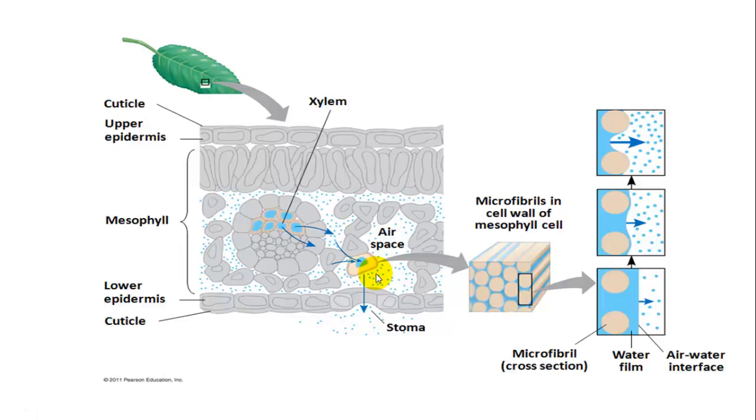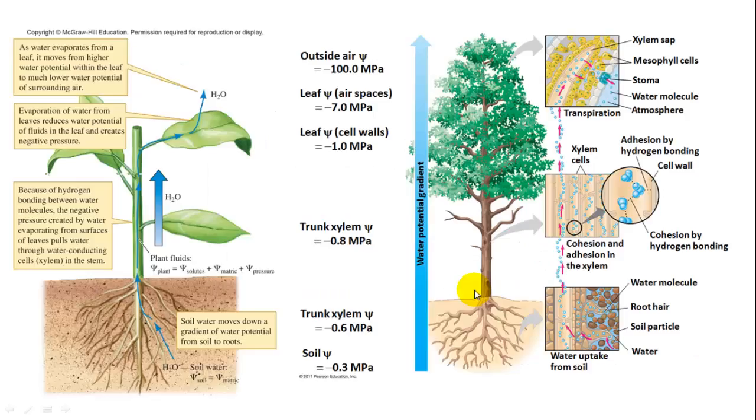Sorry, cohesion is water sticking to itself. Adhesion is it sticking to these different cells. So again, this is kind of reiterating the other graph we saw, where the soil has the most positive or least negative water potential. And you can see, as you go up into the roots, to the stem, to the branches, to the leaves, to the air, it becomes more and more negative. So the water potential is set up for water to move through the plant.